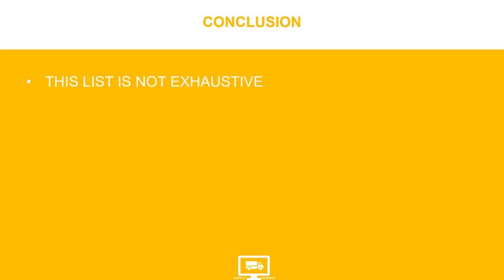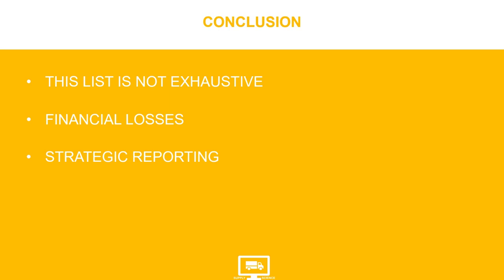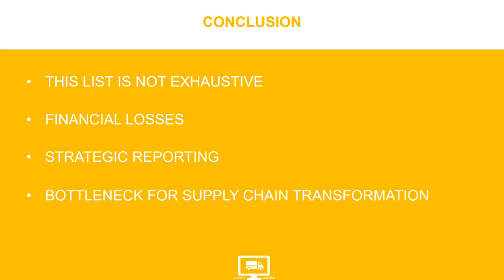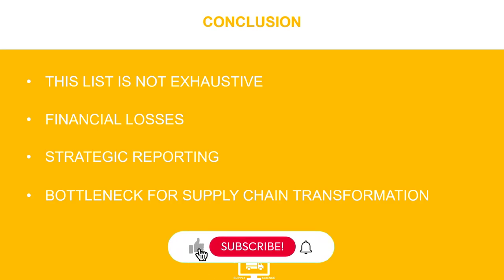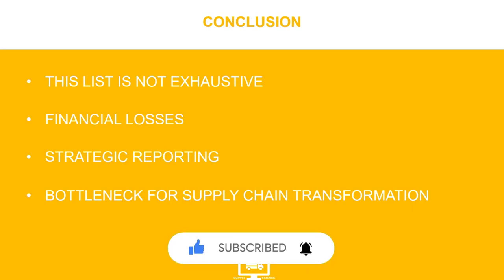To conclude, we have started to sense the impact of master data process issues on your whole supply chain. The list is not exhaustive and may differ in your organization, but financial losses can be exponential — especially considering penalties and fines for customs clearance or late deliveries. Moreover, strategic reporting can be impacted, and it can eventually become a major bottleneck for your supply chain transformation and continuous improvement initiatives. I hope this video gave you enough insight on how good master data management can be crucial for your organization. Feel free to share questions in the comment section.